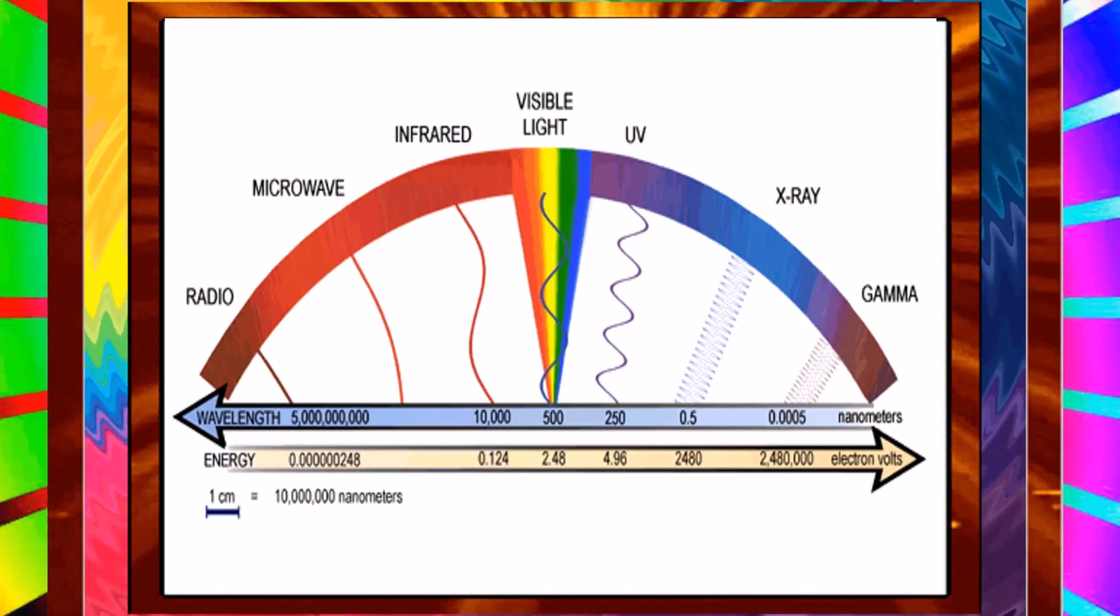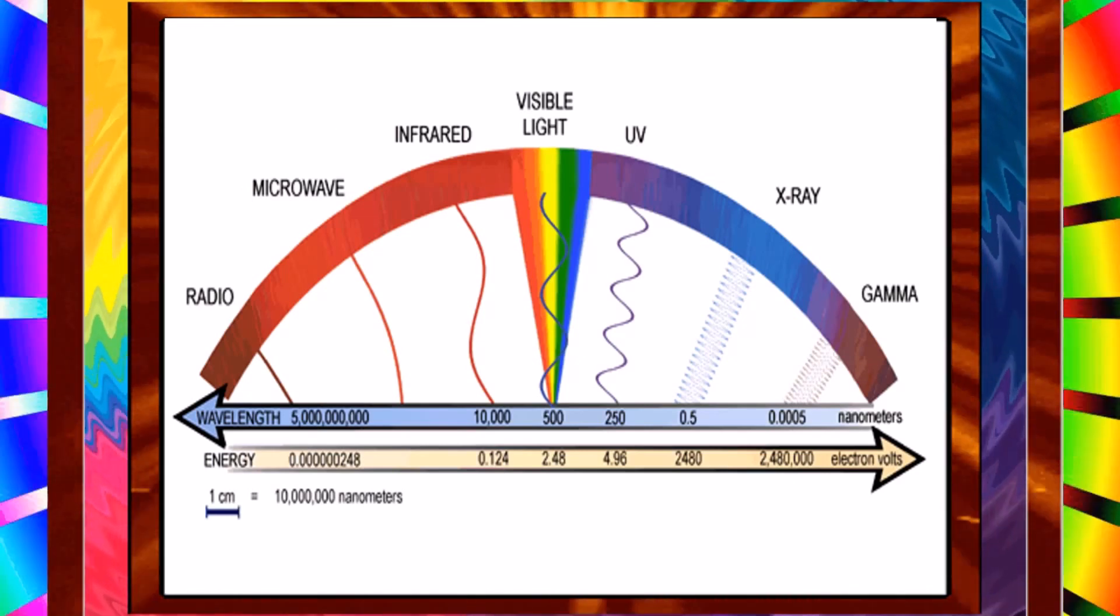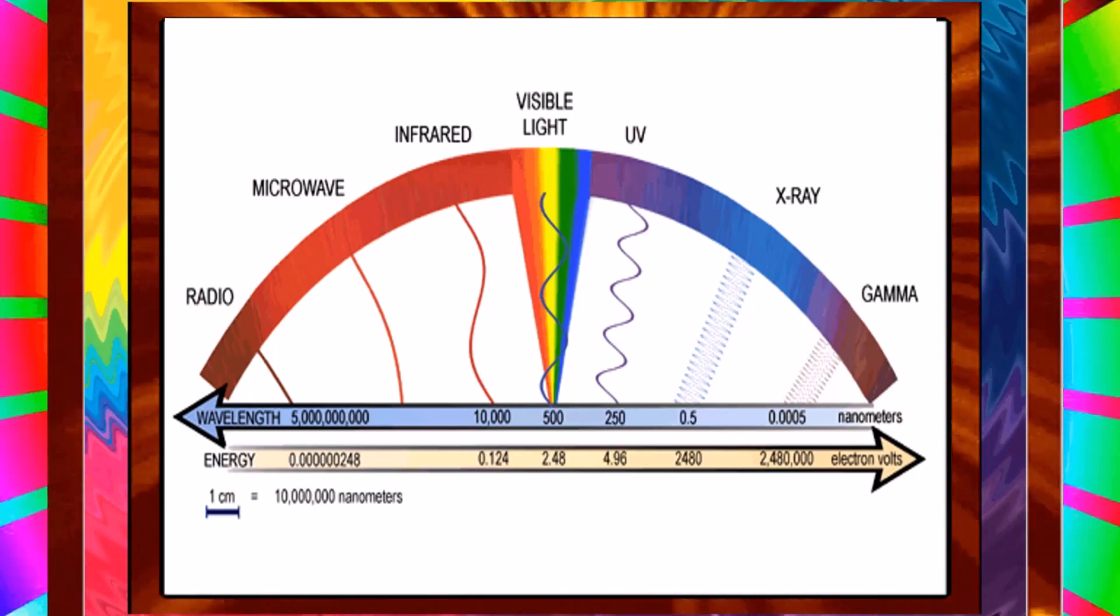Electromagnetic waves form a spectrum of different wavelengths. This spectrum includes visible light, X-rays, and radio waves. Electromagnetic radiation can be useful as well as hazardous.